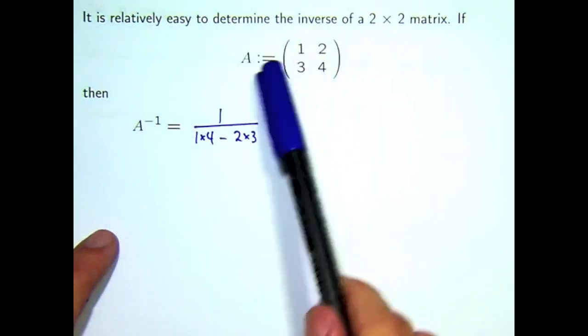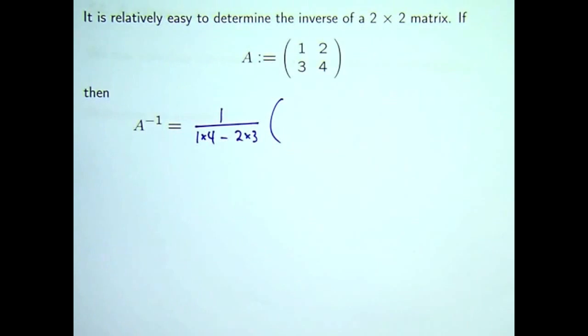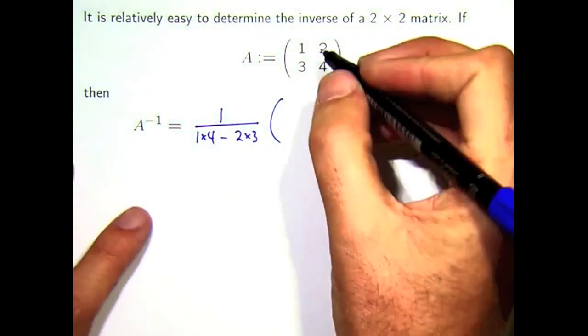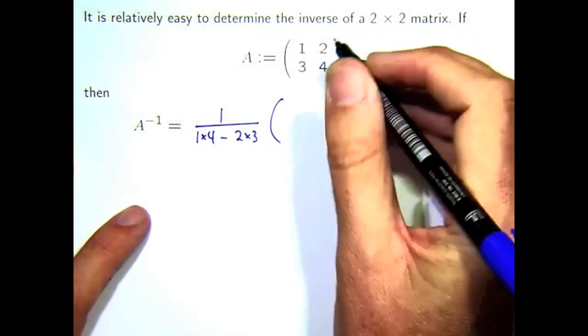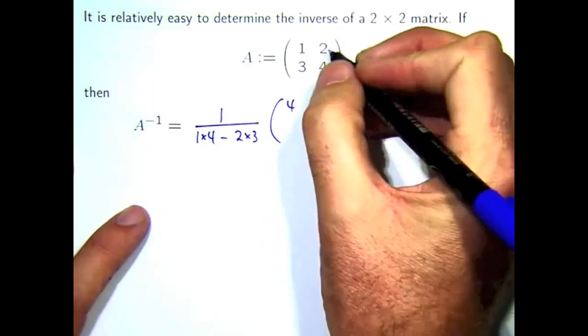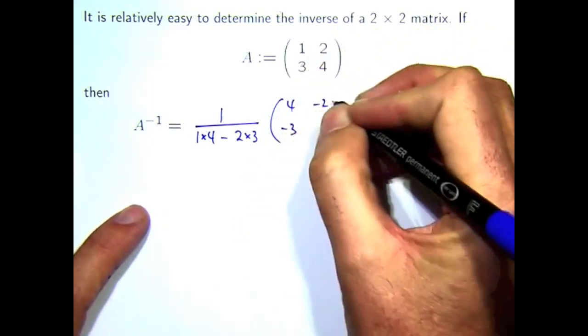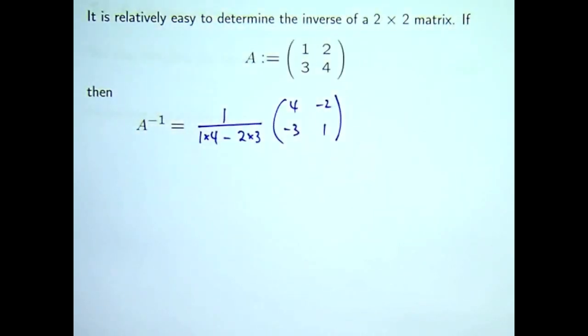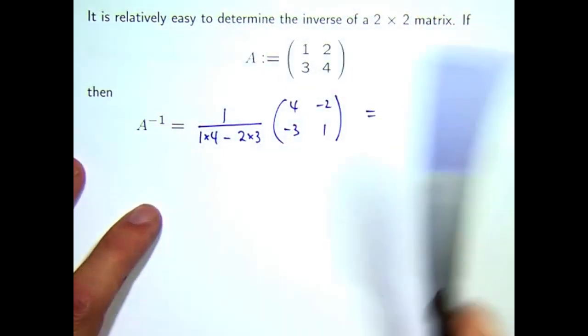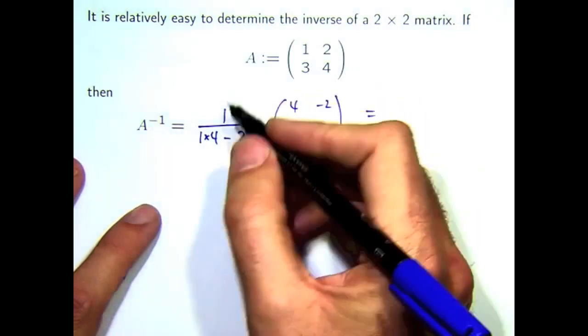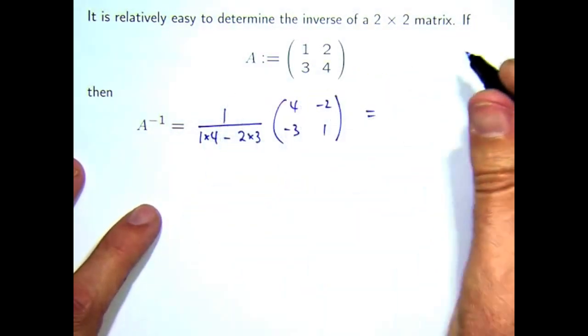And then you take A and you slightly move around some of the elements. So you switch 1 with 4, so these diagonal elements. And the other 2 diagonal elements you just change the signs on them, you keep them the same. So if I simplify this I'll get 4 minus 6 on the bottom.